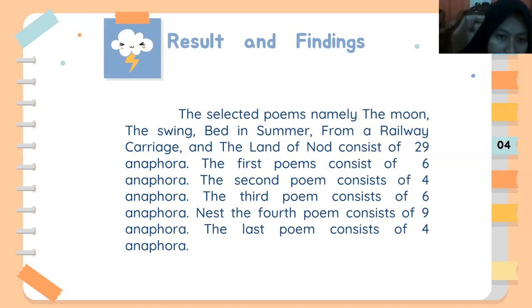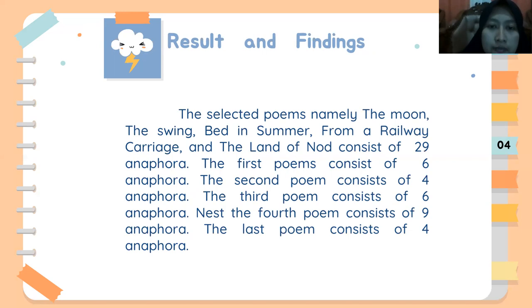From the analysis of anaphora in every five poems, almost in every stanza of the poems there is a sentence, phrase, or anaphora clause. The poems analyzed are The Moon, The Swing, The Bed in Summer, From a Railway Carriage, and The Land of Mood.